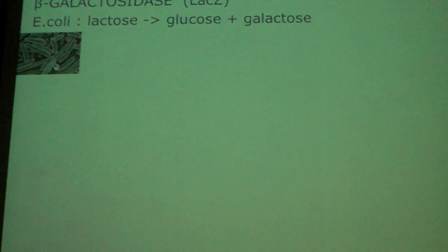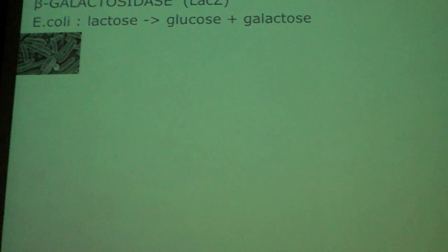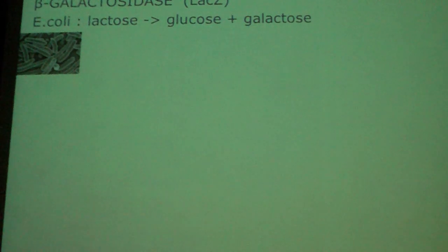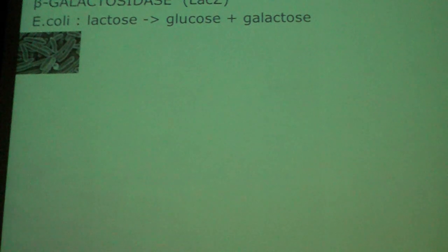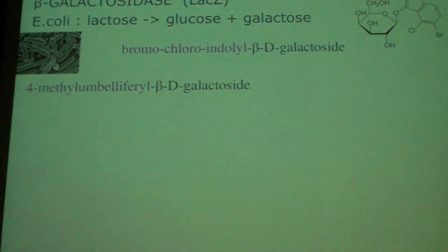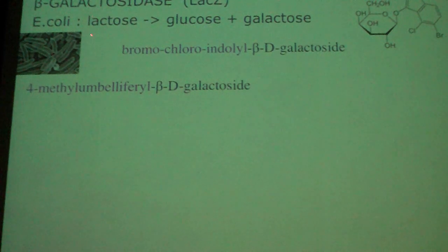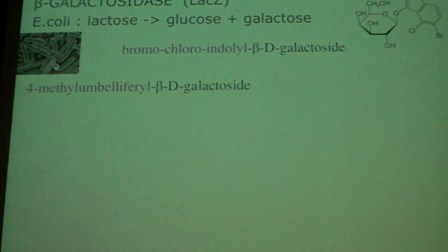Two more examples: beta-galactosidase is an E. coli enzyme that naturally occurs and is used to break down lactose into glucose and galactose. This enzyme needs a substrate. The natural substrate is lactose, but if you use lactose you cannot easily visualize or quantify the products glucose and galactose.